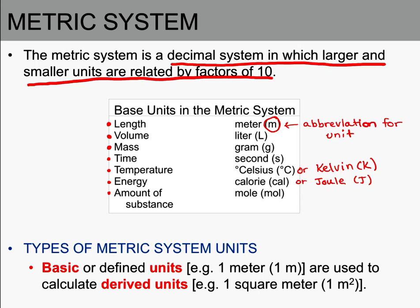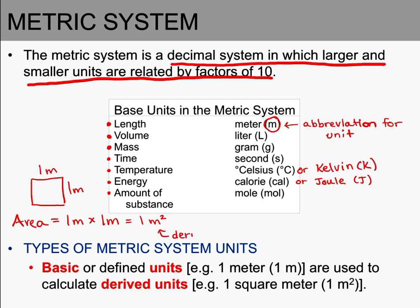All of the units just discussed are basic or defined units, and we can use those to calculate what are called derived units. For example, if we measure the area of a square where each side is one meter in length, the area equals one meter times one meter, which is one meter squared. That meter-squared unit is derived from this calculation. Density, covered later in chapter one, also has a derived unit.